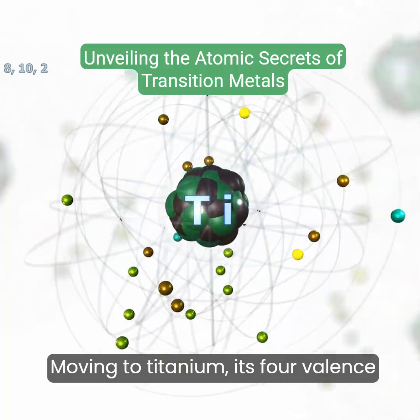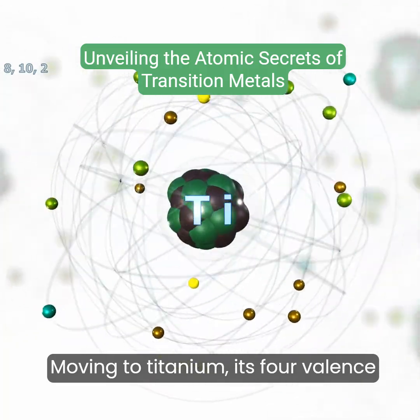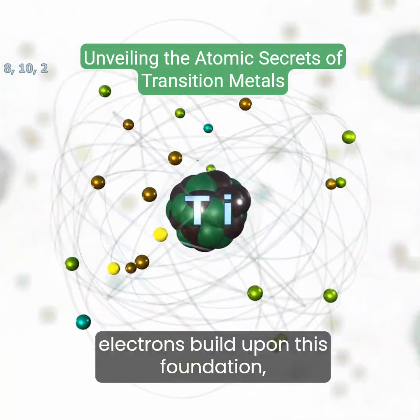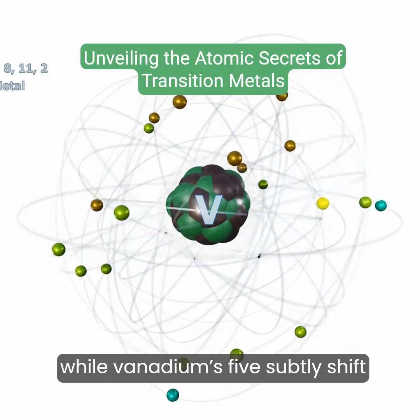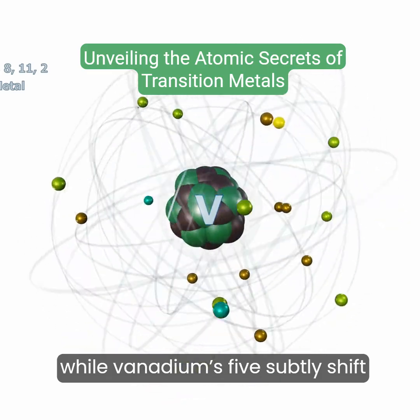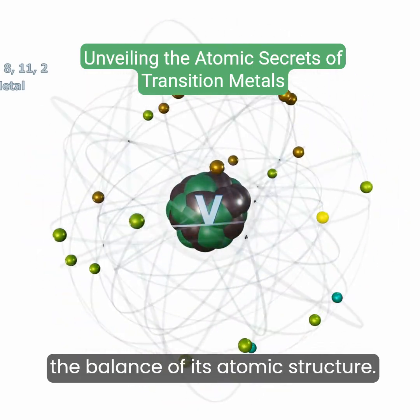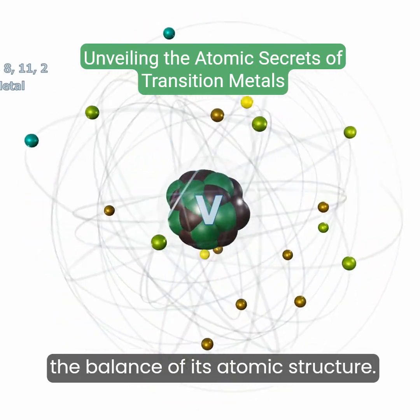Moving to titanium, its four valence electrons build upon this foundation, while vanadium's five subtly shift the balance of its atomic structure.